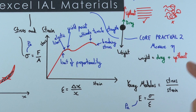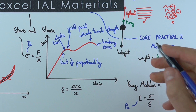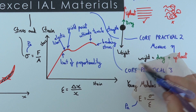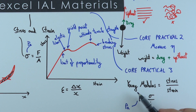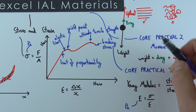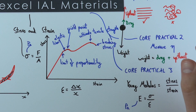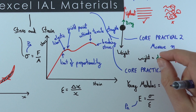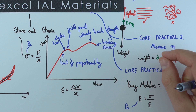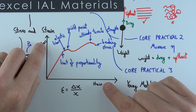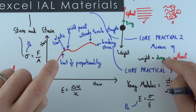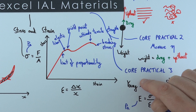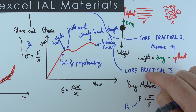Core practical three is where you measure the Young modulus of a material. Often you use a piece of wire — adding a small weight gives a small extension which can be measured. You can then calculate the stress and strain, and plotting those on a graph allows you to find the gradient to determine the Young modulus for that material. This is covered in more detail in another video.